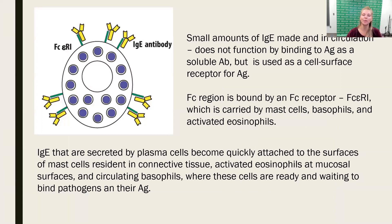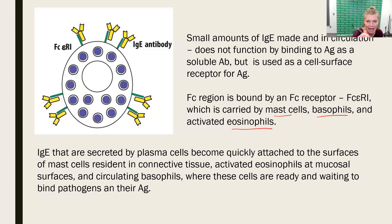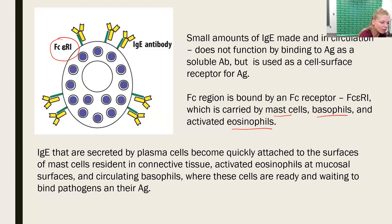IgE is a funny class in that once it gets made, it pretty much gets bound immediately by basophils, mast cells, and eosinophils — it really doesn't circulate in the system for very long. The receptors that mast cells, basophils, and eosinophils have on their surface are called FC-epsilon receptors, which bind to the FC portion of IgE. So as soon as IgE is secreted, it's going to be bound to the surface of these cells.